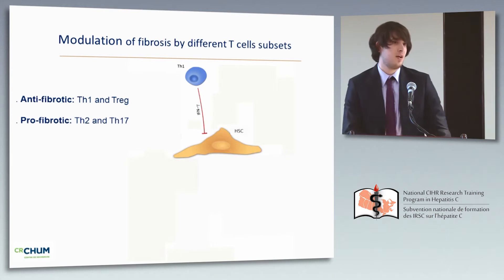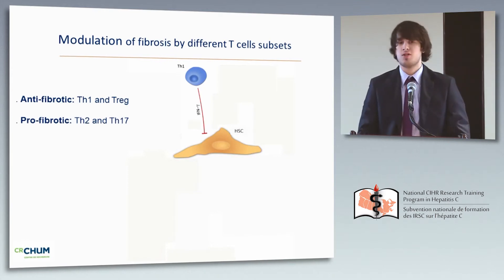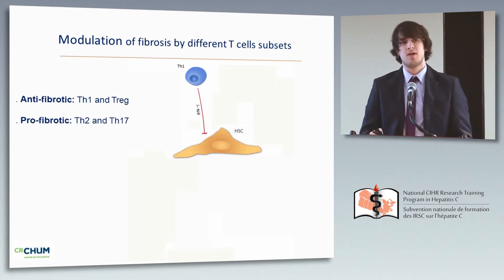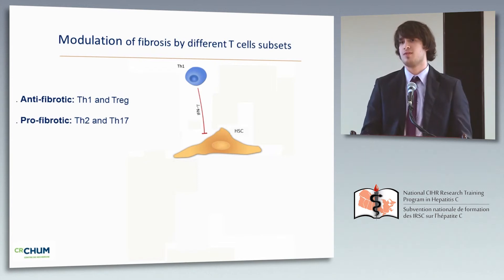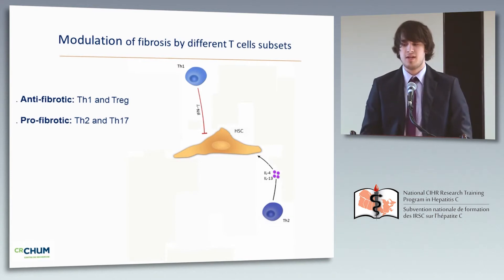Briefly, TH1 cells are considered anti-fibrotic because the secretion of interferon-gamma can block the response of stellate cells to the major pro-fibrotic signal TGF-beta. On the other hand, TH2 cells can directly activate hepatic stellate cells through secretion of IL-4 and IL-13.